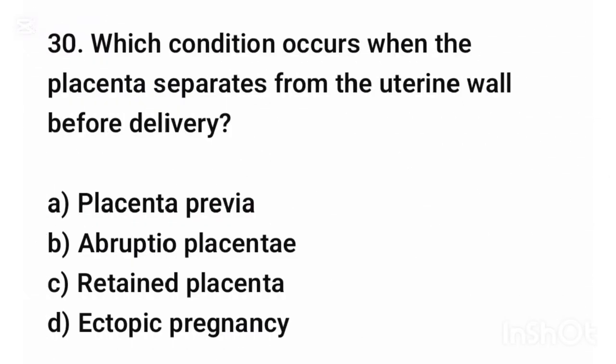Question number thirty. Which condition occurs when the placenta separates from the uterine wall before delivery? The correct answer is option B: Abruptio placenta.